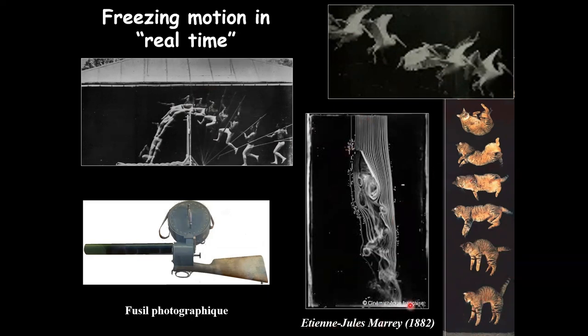Later in his life, Etienne Jules Marais got also interested in fluid flow and turbulences in fluids. And he did also some very nice films of fluid flow. Anyway, let's come back to the cat.